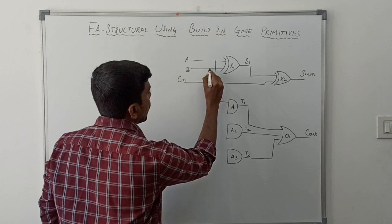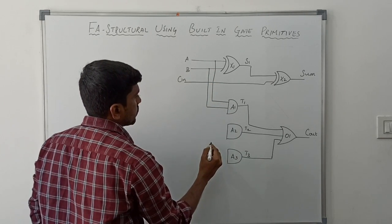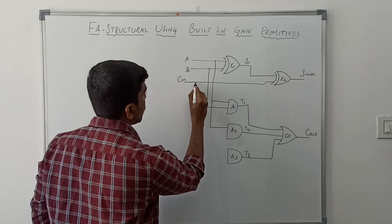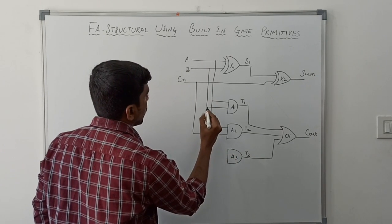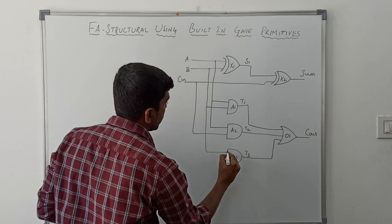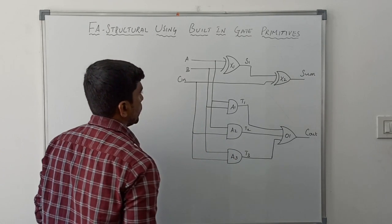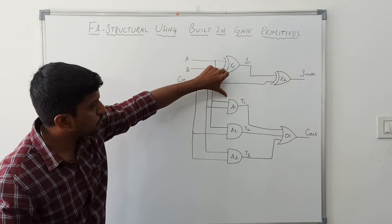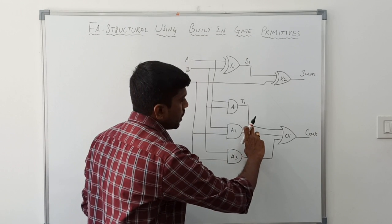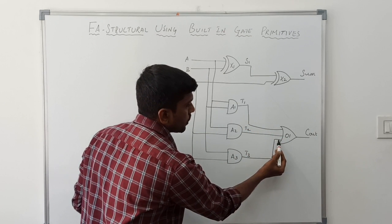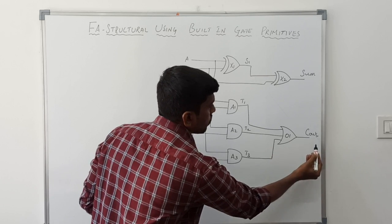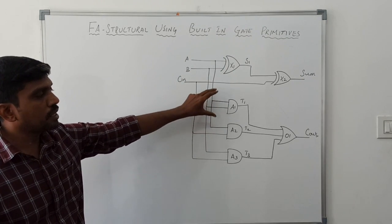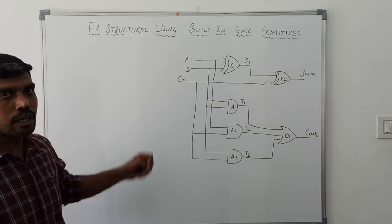The first AND gate takes inputs a and b. The second AND gate takes a and c-in. The third AND gate takes b and c-in. Now you are assigning inputs for x1, x2, a1, a2, a3, and finally the three outputs of the AND gates are connected to the inputs of the OR gate. We can get the output c-out. This logical diagram uses multiple gate instantiations and nets.